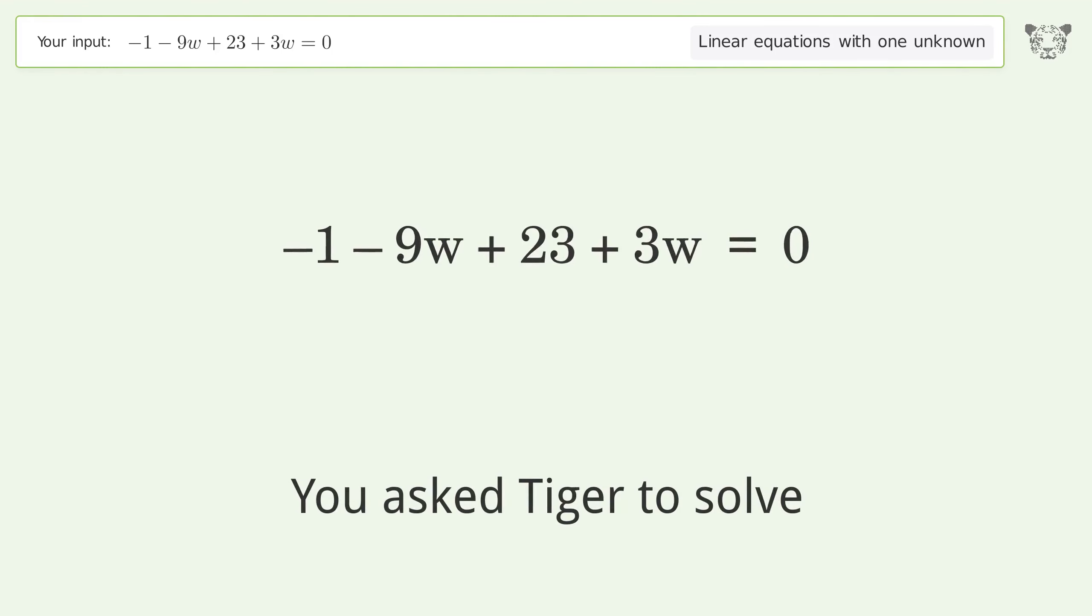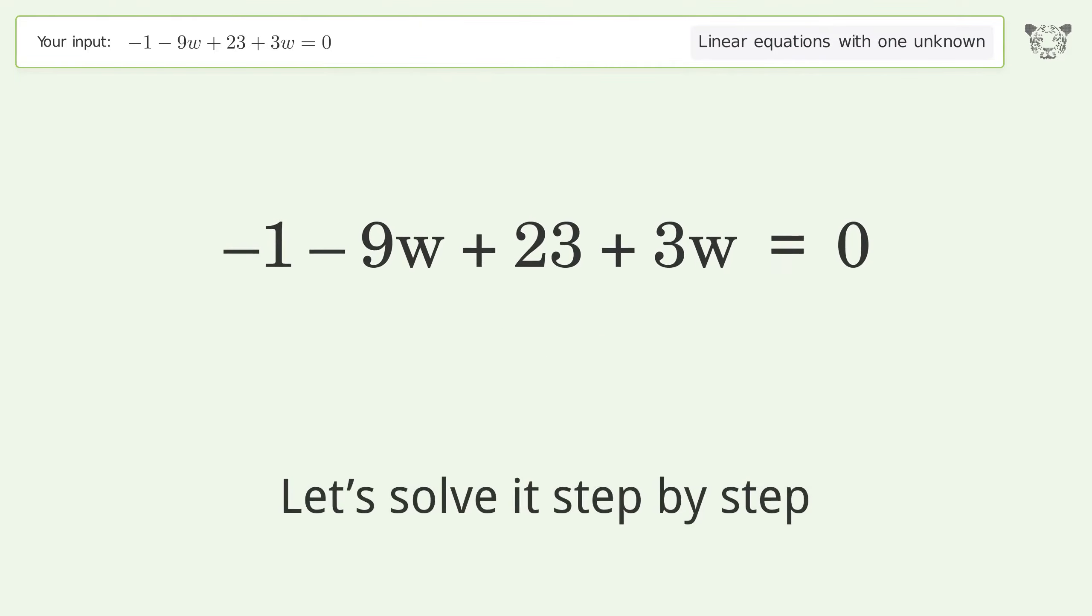You asked Tiger to solve this linear equation with one unknown. The final result is w equals 11 over 3. Let's solve it step by step. Simplify the expression.